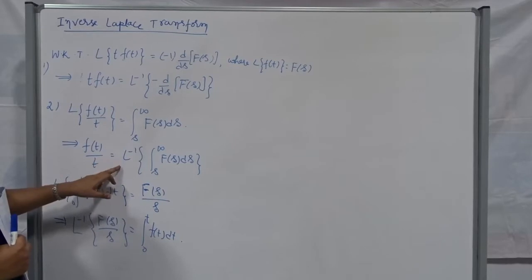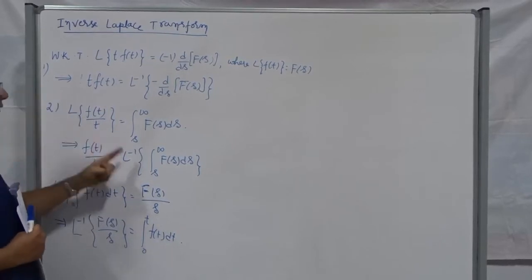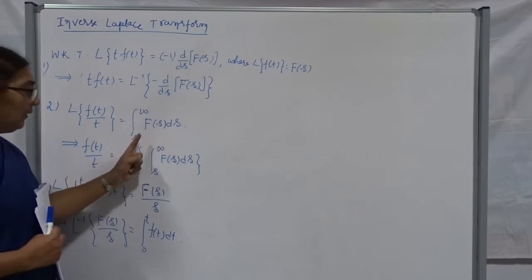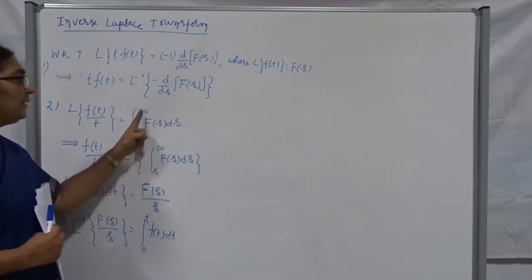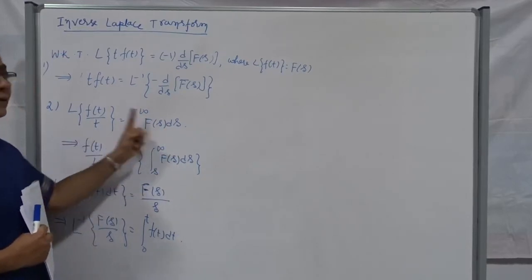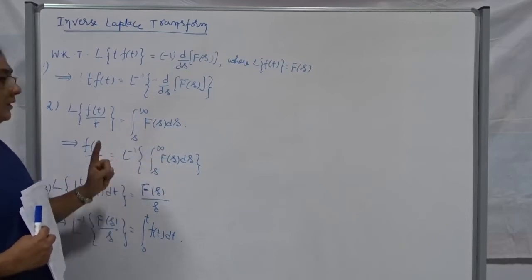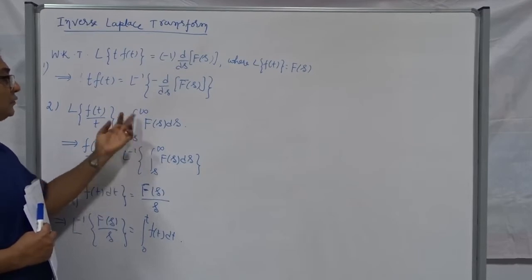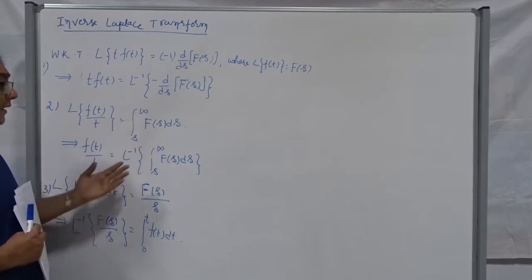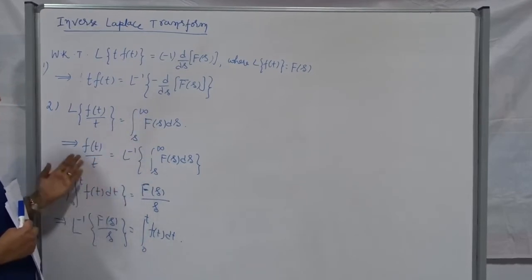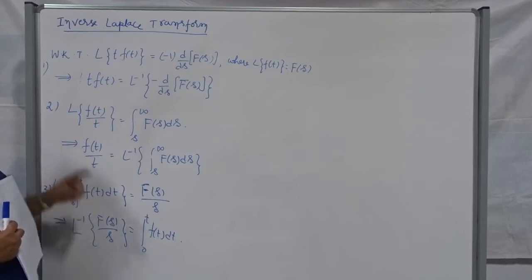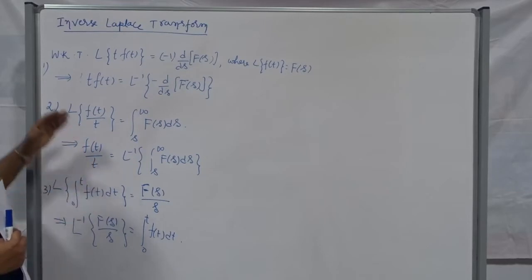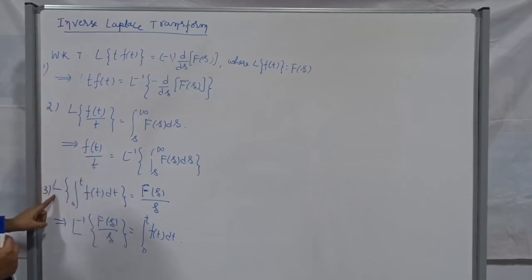After you evaluate this, just multiply by t and we get f(t). Keep in mind: we are going to use this formula only whenever it is possible to evaluate F(s) in the limit S to infinity. If we can't evaluate the integral from S to infinity for the function F(s), then we can't proceed and we don't get f(t). Therefore, while applying the results, please take care to apply suitable formulas.